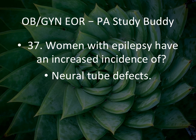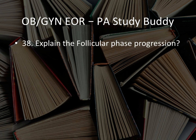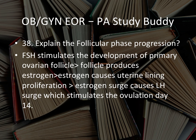Question 37: Women with epilepsy have an increased incidence of neural tube defects. If the stem says the patient has a history of epilepsy, an increased risk is neural tube defects. Question 38: Follicular phase progression — FSH stimulates development of the primary ovarian follicle; follicle produces estrogen; estrogen causes uterine lining proliferation; estrogen surge causes LH surge, which stimulates ovulation on day 14.